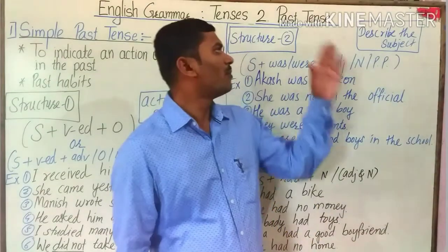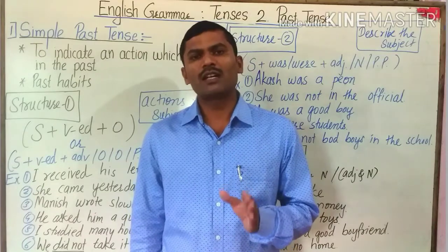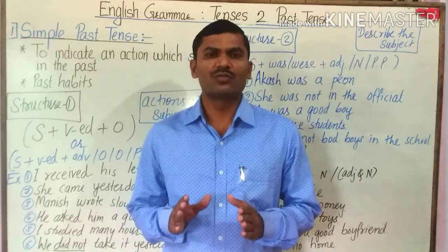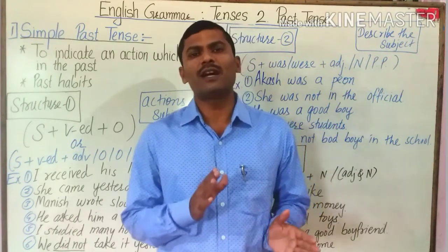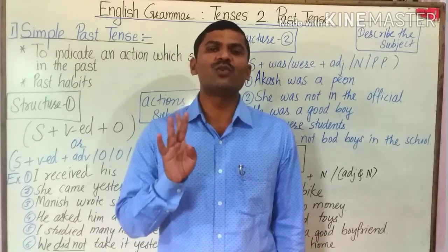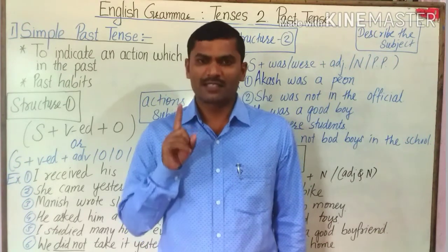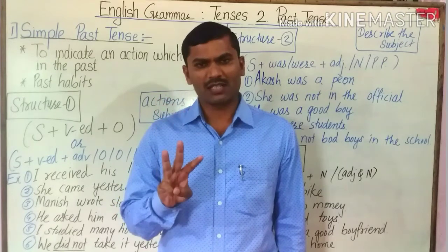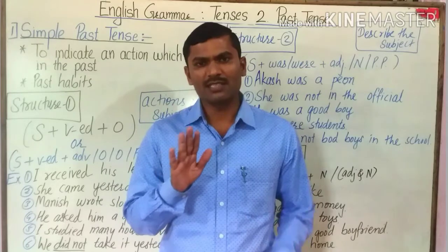The second tense is past tense. Past means before — it means ago. Past tense is used to tell the action which had already happened in the past. This past tense also has four subtypes: simple past tense, past continuous tense, past perfect tense, and past perfect continuous tense.